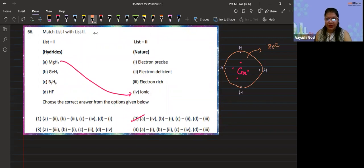Eight electron system. There is no extra electron which is present with the germanium in the outermost shell, so it is electron precise species. So B is related with one. My first is matching and my second option is also matching.